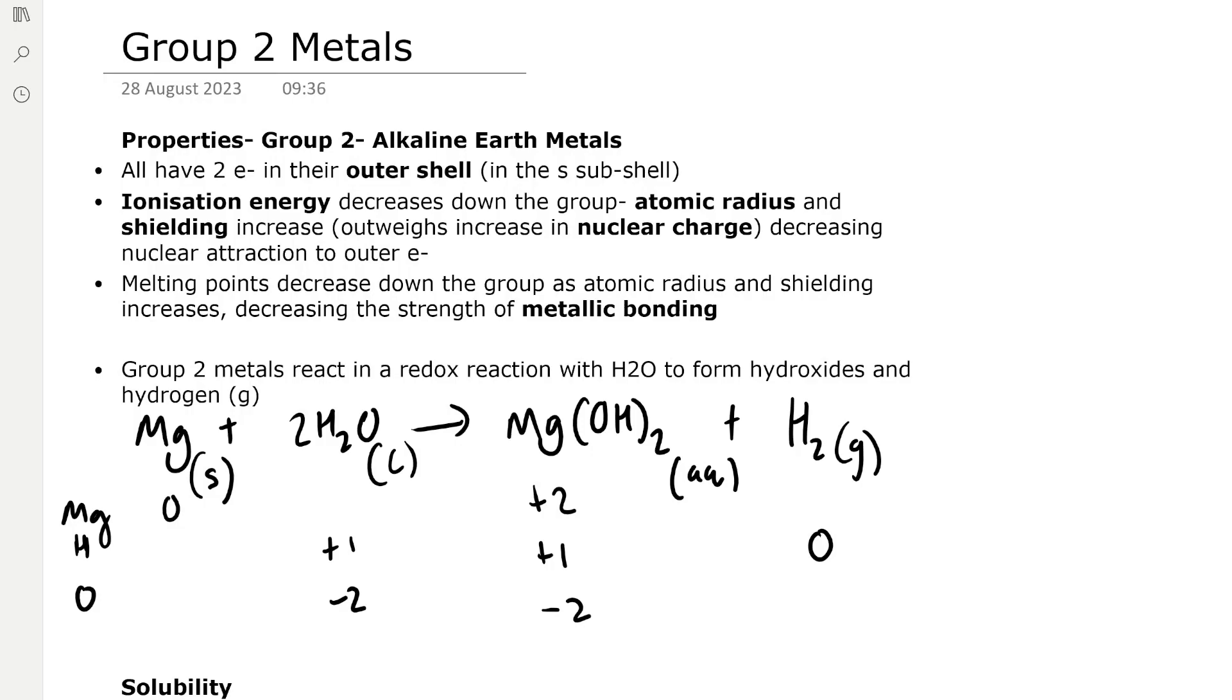Group 2 metals react in a redox reaction with water to form hydroxides and hydrogen. For example, in this equation, magnesium reacts with two molecules of water to form magnesium hydroxide, Mg(OH)2, and hydrogen gas.